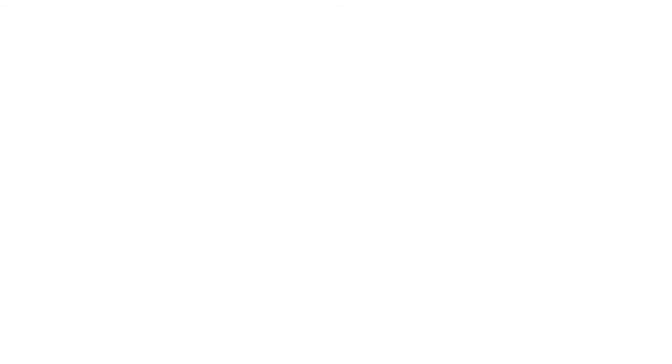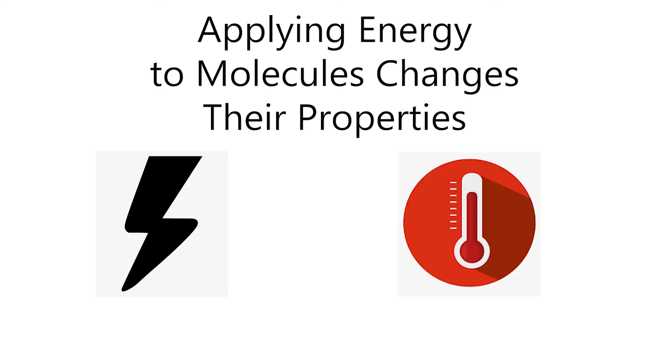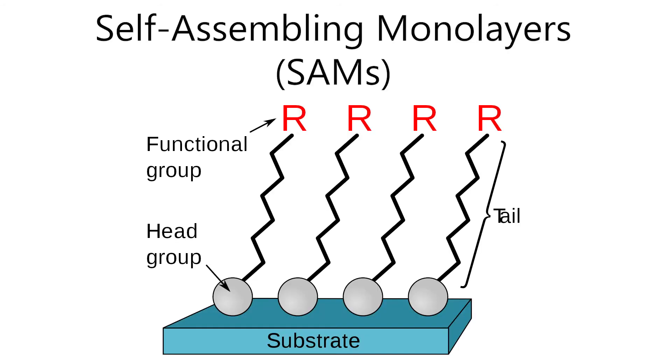There are many other forms of chemical manipulation. For example, applying energy in the form of electricity or heat to make objects move, or using self-assembling monolayers, which are methods of sensing contact or movement at the chemical level.